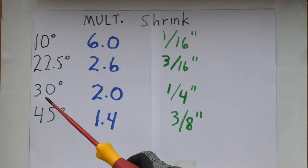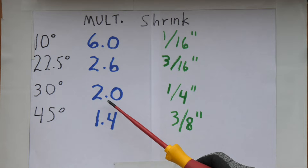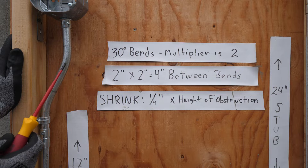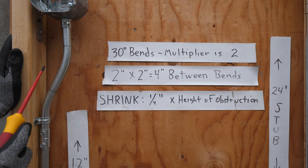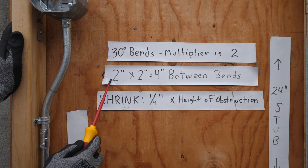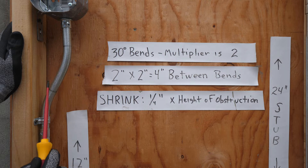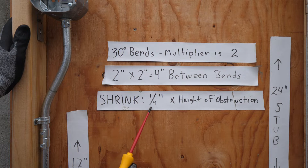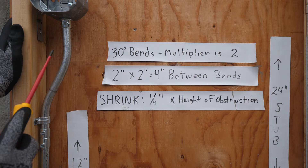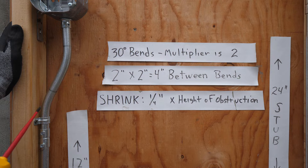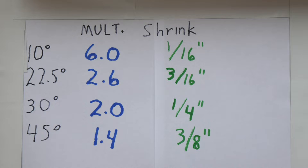The next angle is 30 degrees. The multiplier is 2, and the shrinkage is a quarter of an inch. Here's an example of a 30-degree offset bend — it's 2 inches from here to here, so that's our distance. The multiplier is 2, so 2 times 2 equals 4 — there's 4 inches between the marks. Your shrinkage is a quarter inch times the height of obstruction, so with 2 inches of height, you get a half inch of shrinkage.